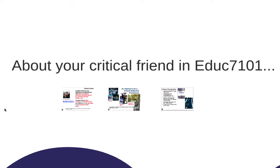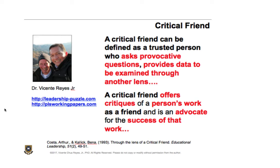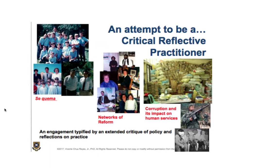A critical friend is someone that ideally you can trust. I'll be asking provocative questions and providing data to be examined through another lens. A critical friend offers critiques of a person's work as a friend and is an advocate for the success of that work. I'm borrowing this notion from Costa and Kallick in their article entitled 'Through the Lens of a Critical Friend.'